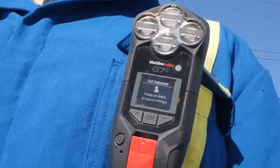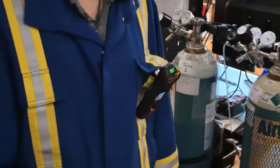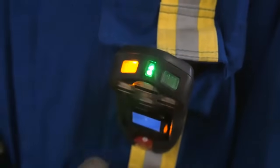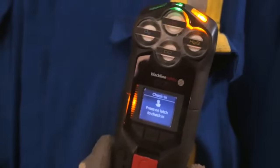If G7 detects that you may have fallen or are no longer moving, a yellow alarm asks you to confirm that you're okay. Similarly, your G7 may ask you to check in periodically. G7 will flash its yellow lights, beep loudly, and vibrate to get your attention.